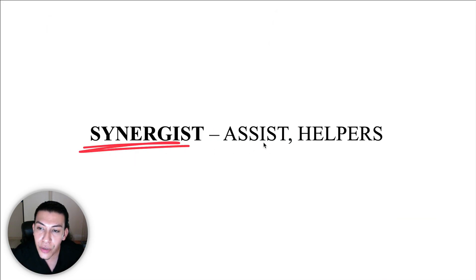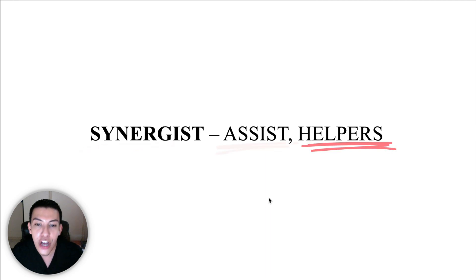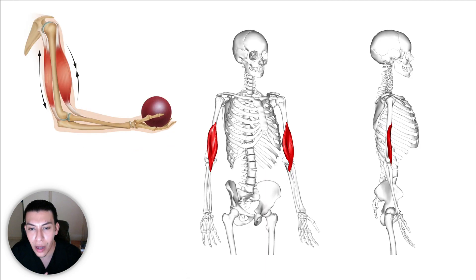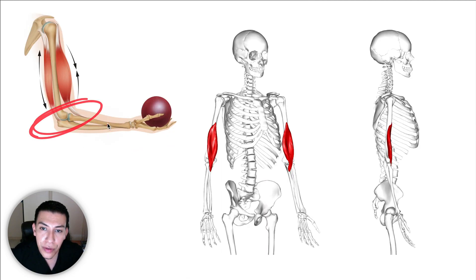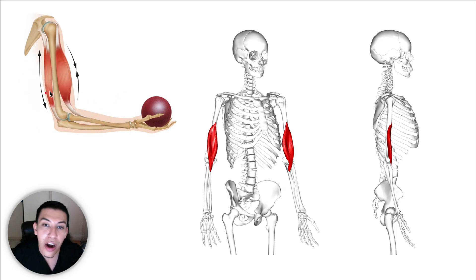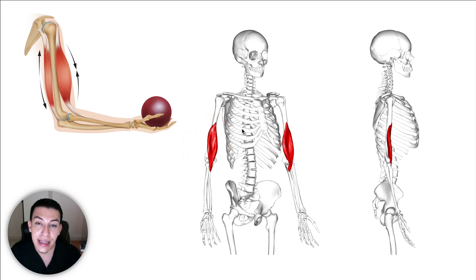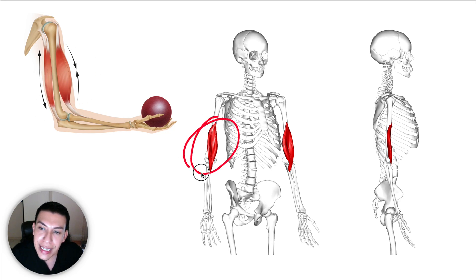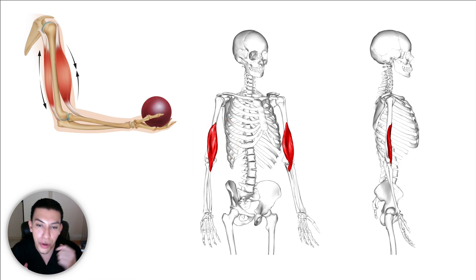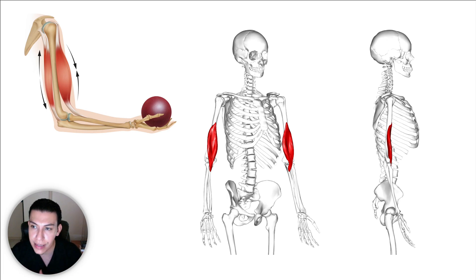A synergist is going to assist — it's a helper. During flexion at the elbow, the biceps brachii are our agonist and the triceps brachii are our antagonist. But the brachialis, which is underneath the biceps brachii, is going to be a synergist, meaning the biceps brachii isn't working alone. The brachialis and the brachioradialis are also synergists to the agonist.